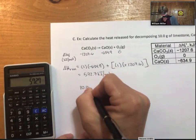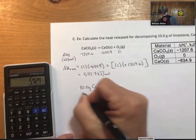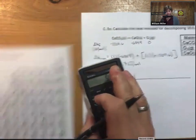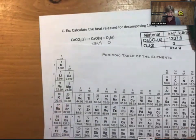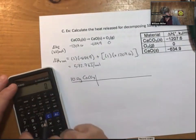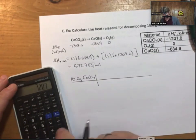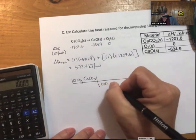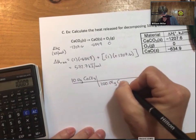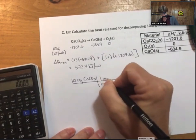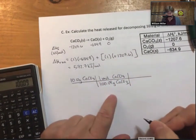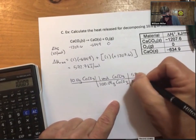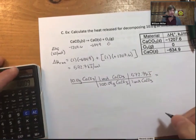And let's see so now we have 10.0 grams of limestone. Got my periodic table right here I need to know that calcium is 40.08, carbon plus 3 times oxygen 100.09.